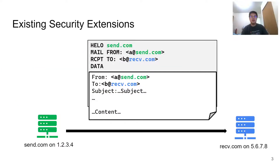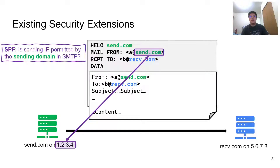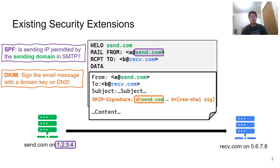Thankfully, there is a set of security extensions that provide a way to authenticate the sender. The first one is SPF. SPF works by setting a DNS text record for the domain, which specifies IP addresses or networks that are allowed to send on behalf of that domain. With that, the receiver can verify if the IP 1234 here is the real sending server of send.com. Besides checking the sending IP, there is also DKIM for ensuring integrity and authenticity of the email message. It works by signing a signature of email headers and body with its private key, while the public key is in a DNS text record of the domain.